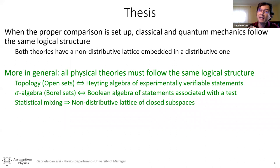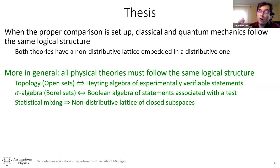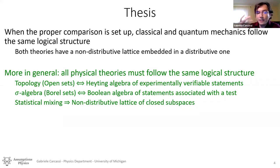The non-distributive lattice would be the statements and the relationship between statements that is typically associated with quantum logic, and the distributive one is associated instead with classical logic because it follows the rules of classical logic. More in general, the point is that it's not a coincidence that these two theories share the same logical structure. We want to put forward the claim that all physical theory must follow the same logical structure, because all physical theory must deal with experimental verification and experimentally verifiable statements — statements that have a test that in a finite time can verify the veracity of that statement.